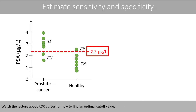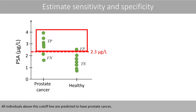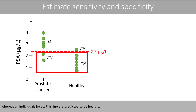Watch the lecture about ROC curves for how to find an optimal cut-off value. All individuals above this cut-off line are predicted to have prostate cancer, whereas all individuals below this line are predicted to be healthy.